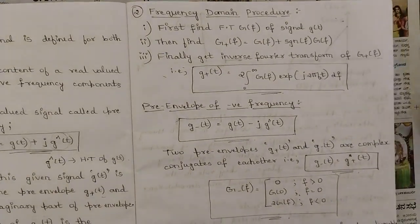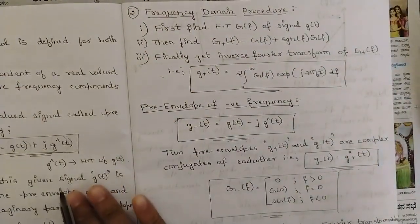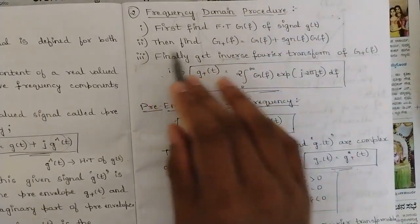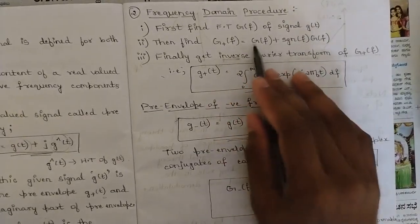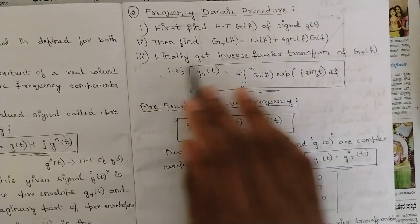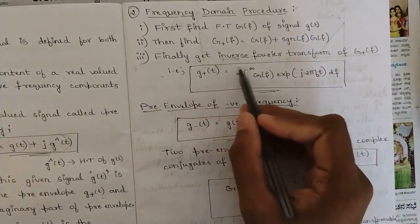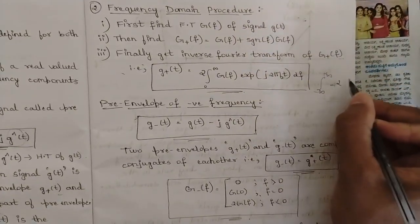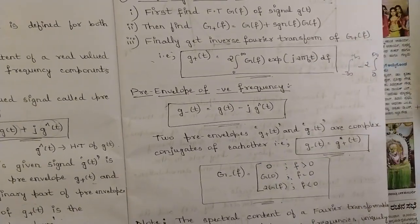For the frequency domain procedure: first, we find the Fourier transform G(F) of signal G(t). Then we find G+(F) in the frequency domain, which equals G(F) plus SGN(F) into G(F). Finally, we take the inverse Fourier transform of G+(F). That is, G+(t) equals two times the integral from zero to infinity, since all the negative frequency components are eliminated — the limits from minus infinity to infinity simplify to two times zero to infinity.